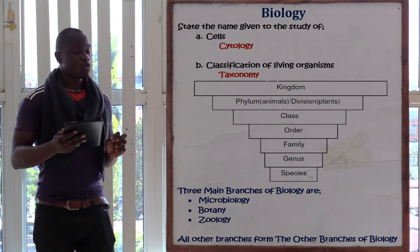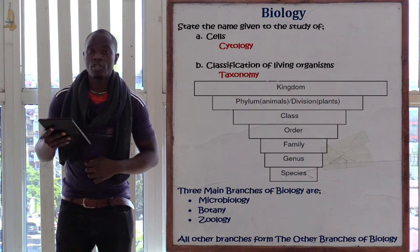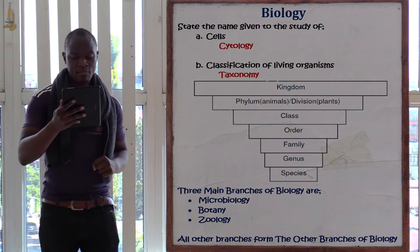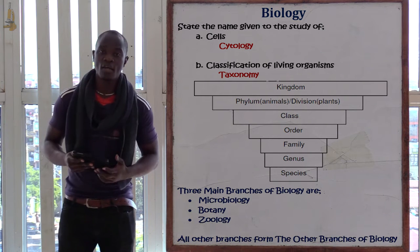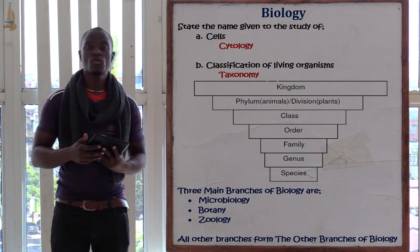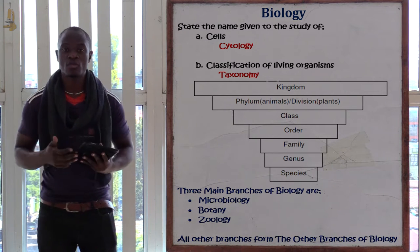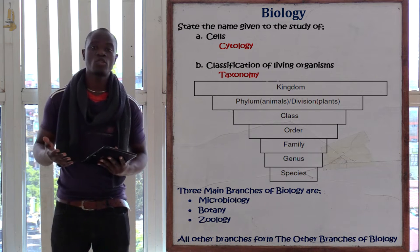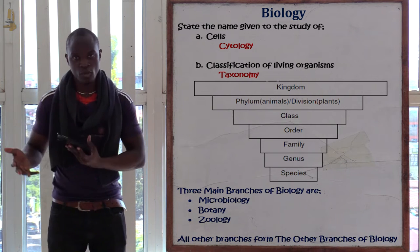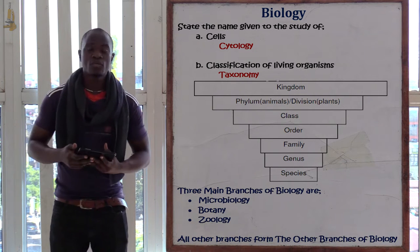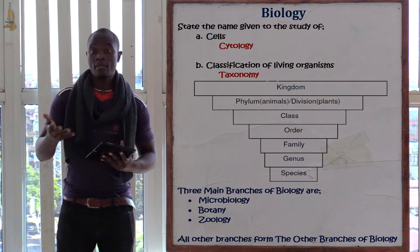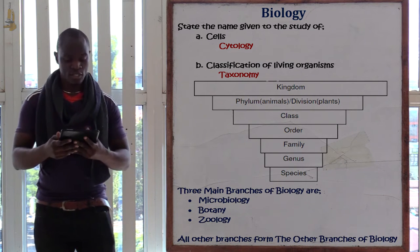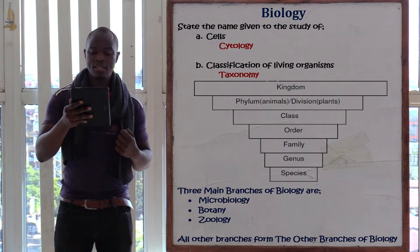Let's go to question number two, which asks: state the name given to the study of cells. The study of cells is referred to as cytology. Remember that. The next part asks: state the name given to the study of classification of living organisms.